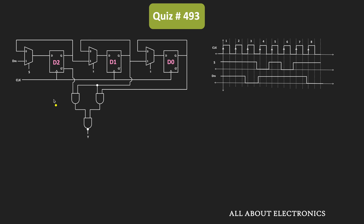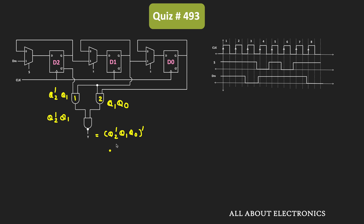The outputs of the flip-flops are connected to the logic gates. Let's say these two AND gates are 1 and 2. For the first AND gate, the inputs are Q2 and Q1, so the output is Q2·Q1. Likewise, the inputs for the second AND gate are Q1 and Q0, so the output is Q1·Q0. These two outputs are connected to the NAND gate. That means the output Y is the complement of Q2·Q1·Q0. We have been asked to find this output Y between the third and fifth clock cycles.